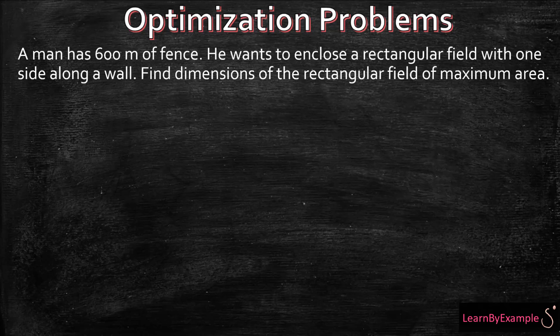So the first thing you want to do is try to extract useful information. We have 600 meters of fence that should immediately ring perimeter in your head. He wants to enclose a rectangular field, so rectangular. Now you know the size of what you're trying to achieve with one side along a wall. So you know that you have a restriction on one side of your rectangle. Find the dimensions of the field that gives you a maximum area. Immediately you know that you're dealing with area and you're going to have to optimize that area.